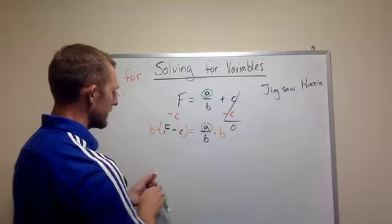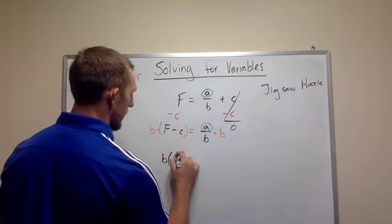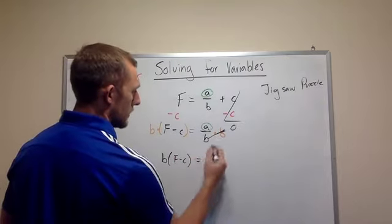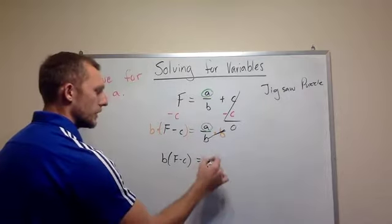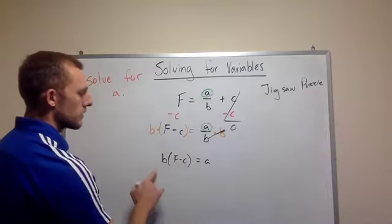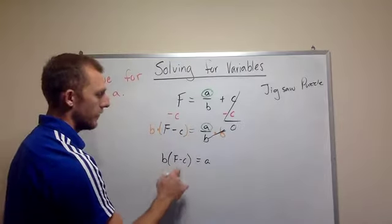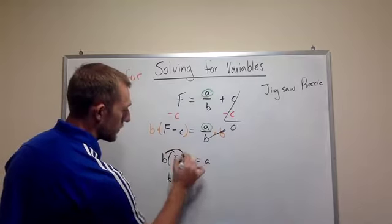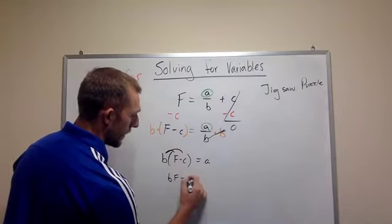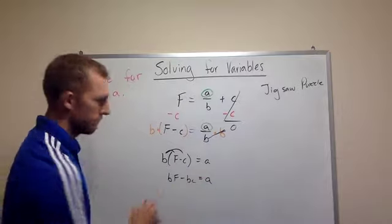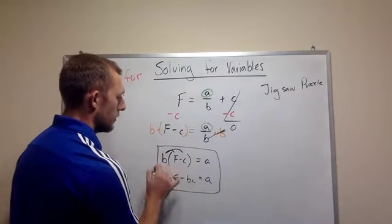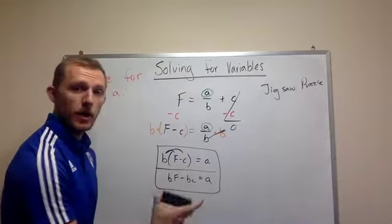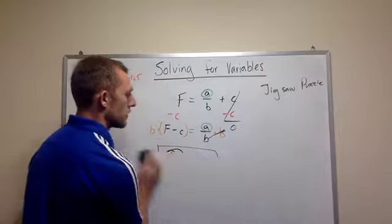So this comes out to be B, F minus C equals, well, that cancels, so it would be A. And we just figured out what A equals. A equals B times F minus C. Which also means B, if you distribute, BF minus BC. Either one of these is the correct answer, I'll accept it. Now let's go ahead, pause it, write everything down, and then let's do another one.